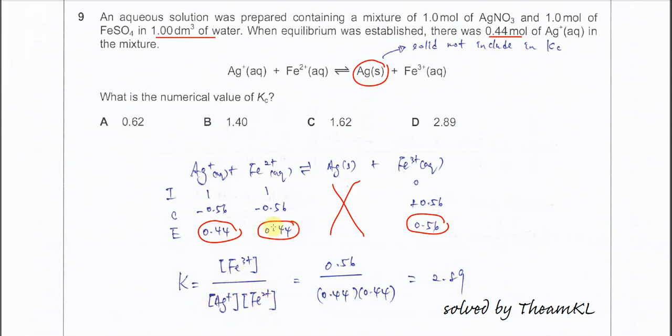Since the silver is solid, we don't put the silver concentration here. We just put the three concentrations that are involved. So substitute all these values, you get 2.89, which is D.